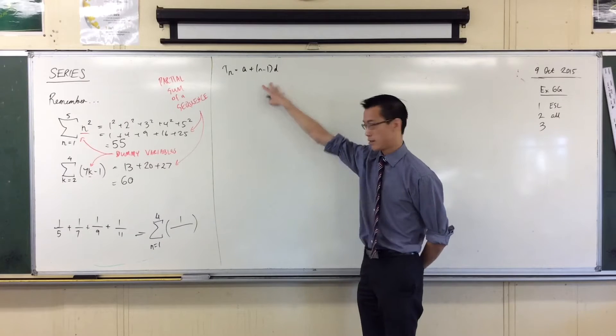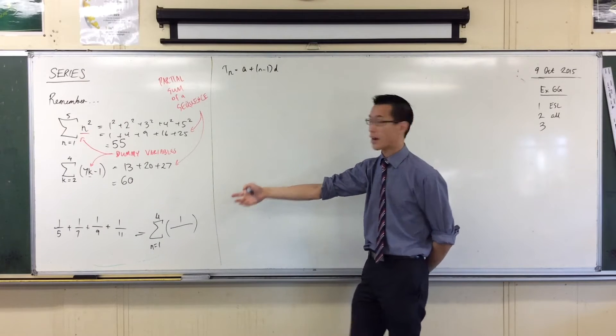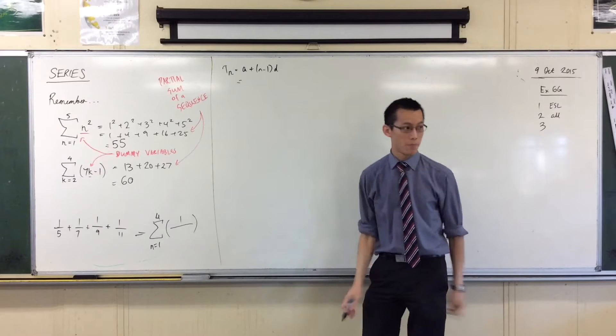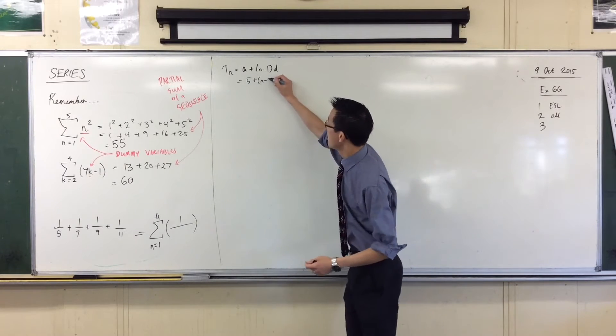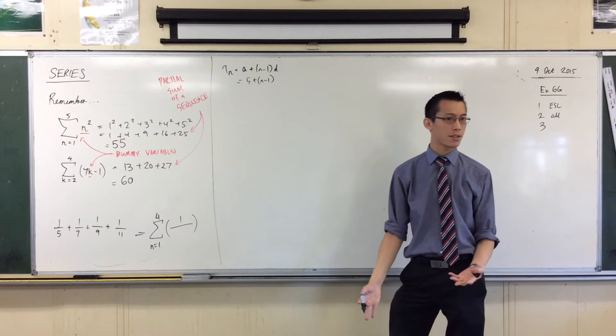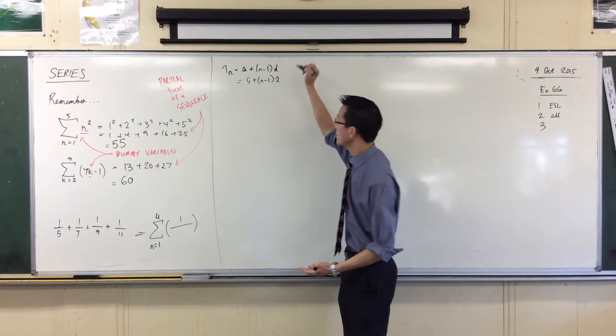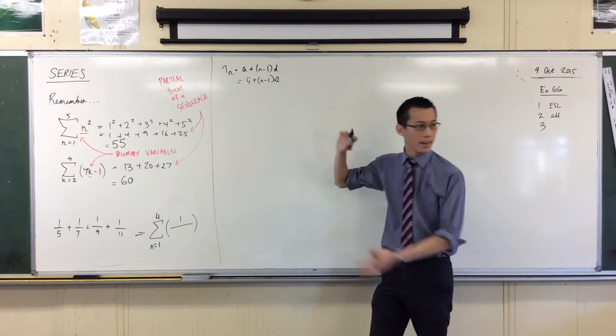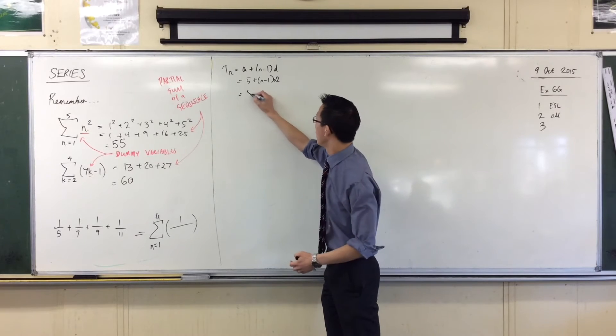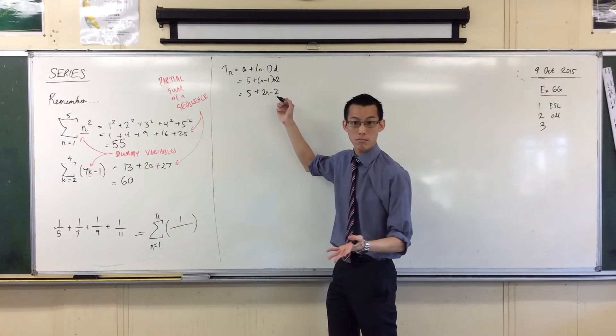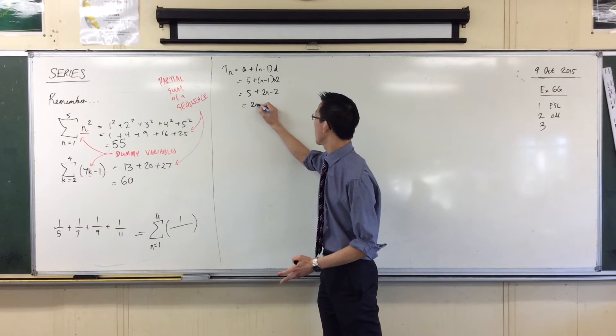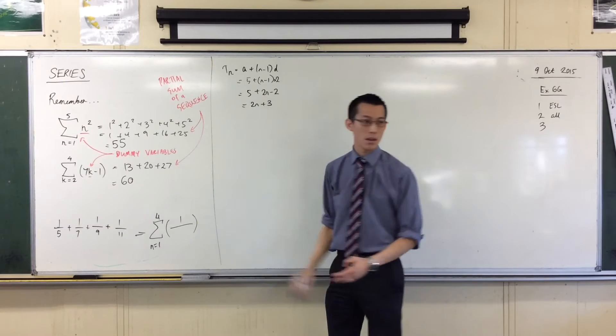Now, I could use this here pretty easily, couldn't I? I could use this. So, what's the first term of my denominators? That's all I'm focusing on. 5. 5 plus n minus 1, and what's the common difference? It's 2. Okay? Times 2, okay? And this is really easy to simplify out. 5 plus 2n minus 2. 2n plus 3.